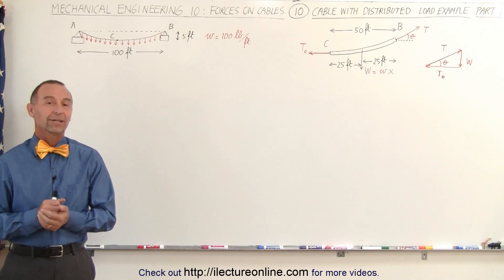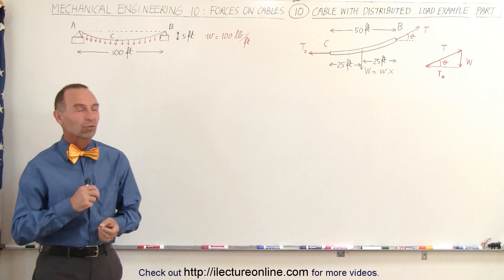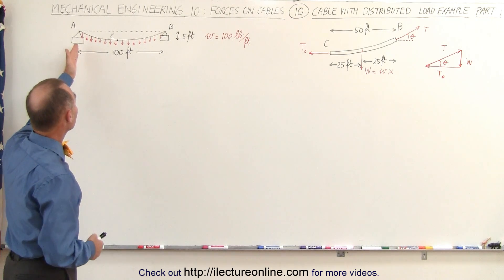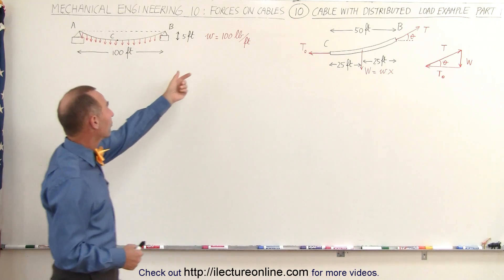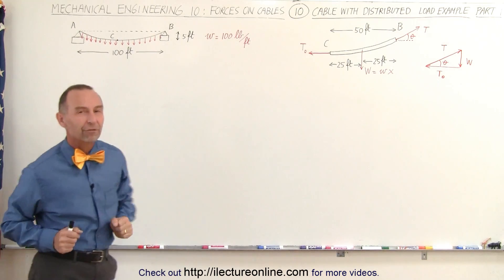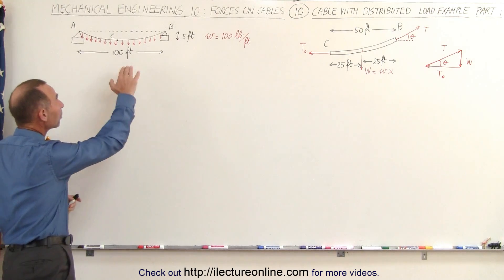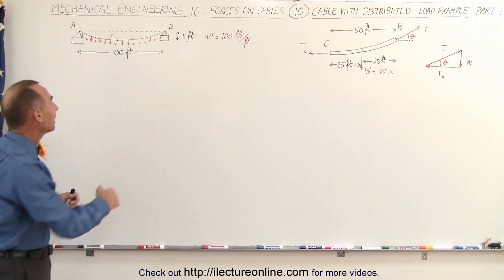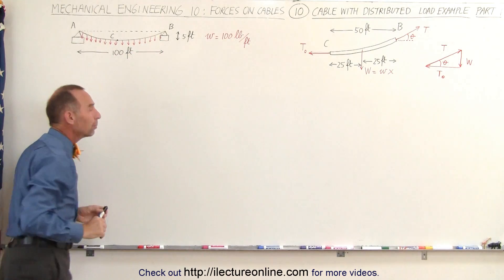Welcome to Electronline. Our next example is a cable with a distributed load. The load on the cable is 100 pounds for every foot of cable. This could be caused simply by the weight of the cable, or because we're attaching something to the cable that is distributed evenly over the entire cable.